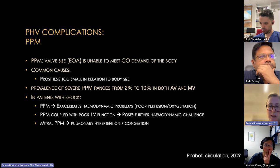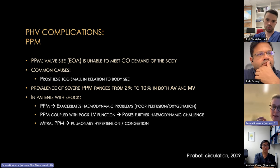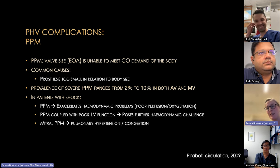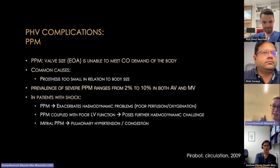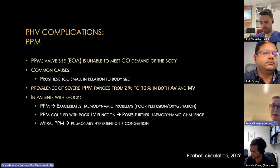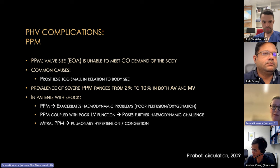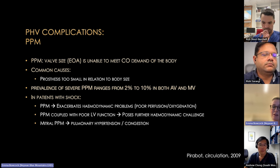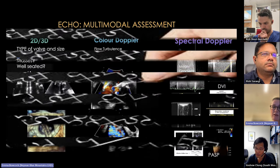Patient-prosthesis mismatch (PPM) is when the effective orifice area of the valve is too small to meet the body's cardiac output demands — essentially too small a valve was placed. It occurs in 2–10% of both aortic and mitral valve replacements. In the ICU, PPM can be unmasked by the physiological stress of illness — sepsis with cardiomyopathy can cause pulmonary hypertension, congestion, RV dysfunction, and hypoxia through this mechanism.